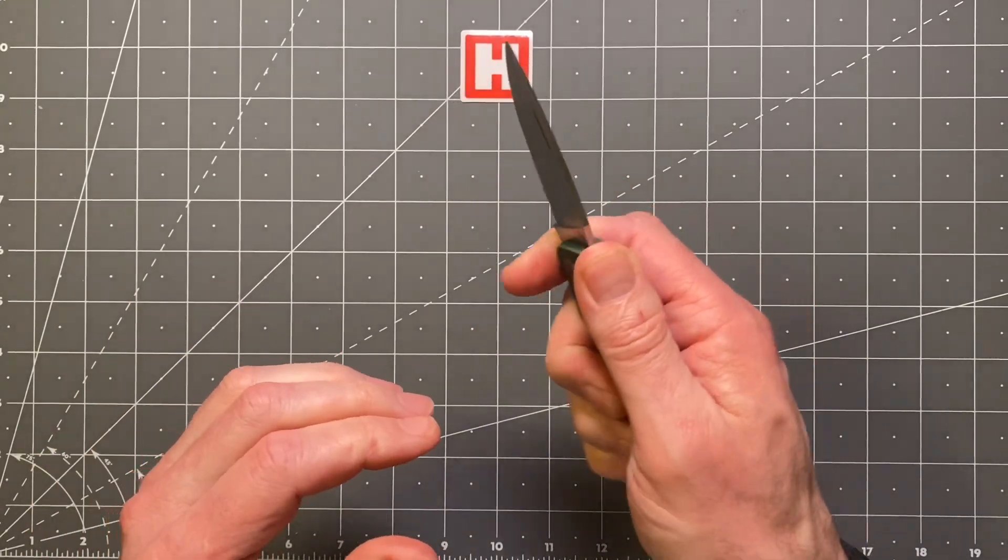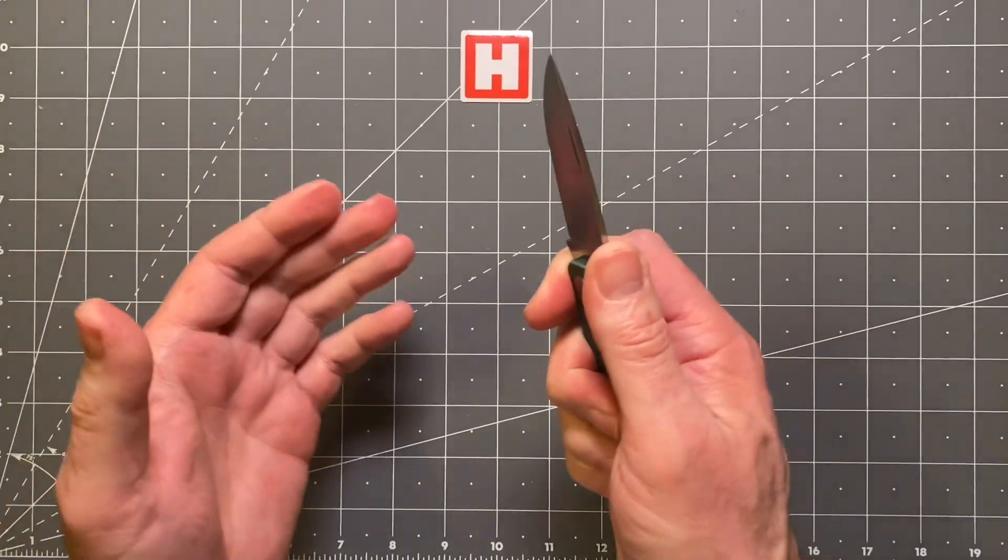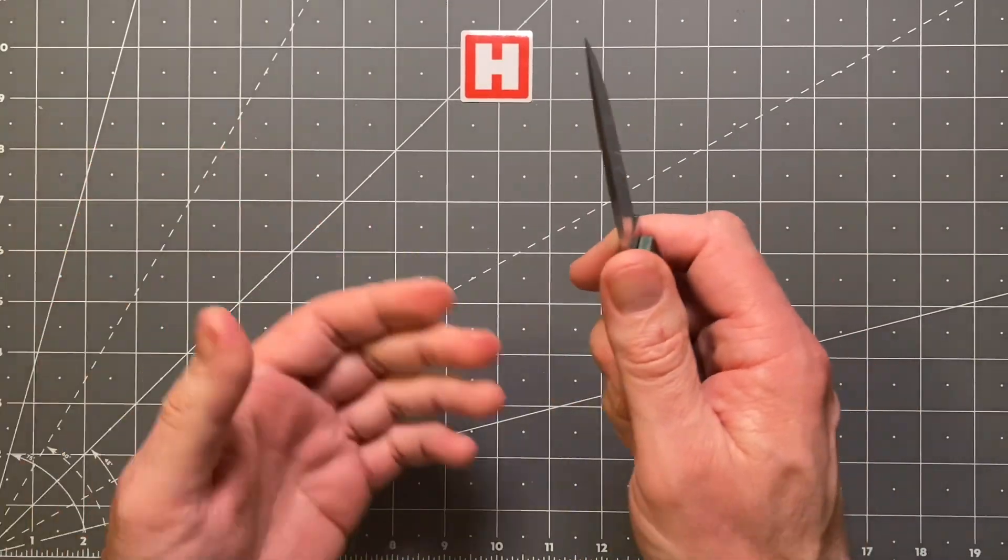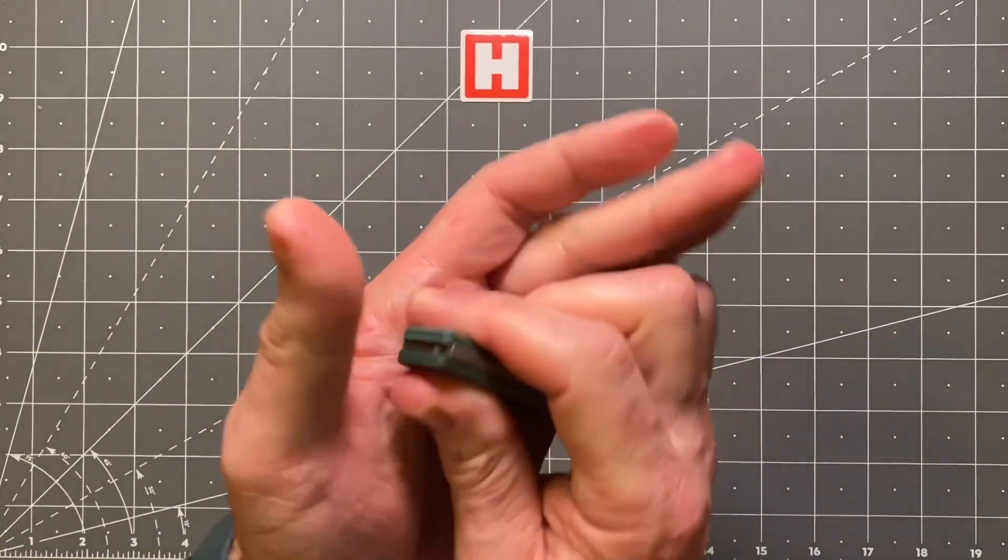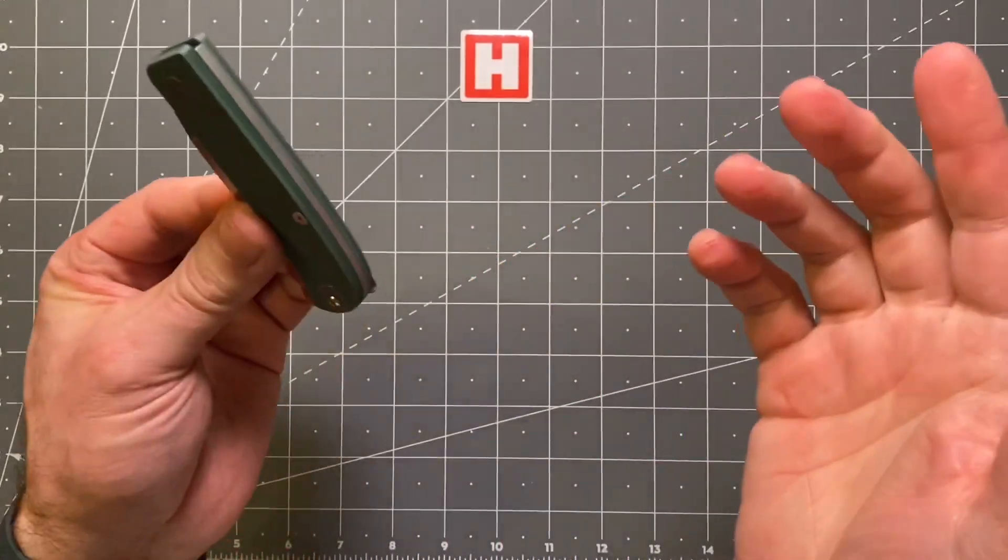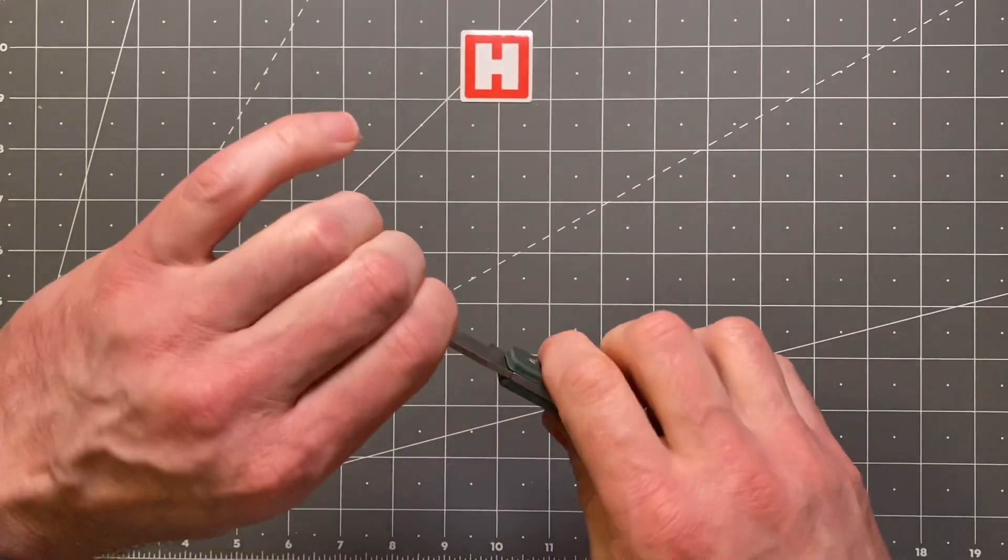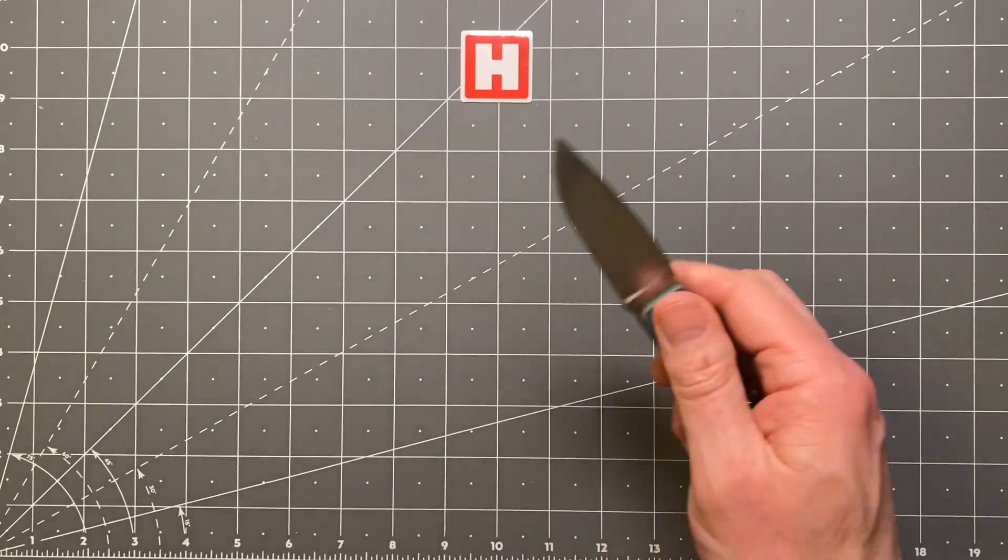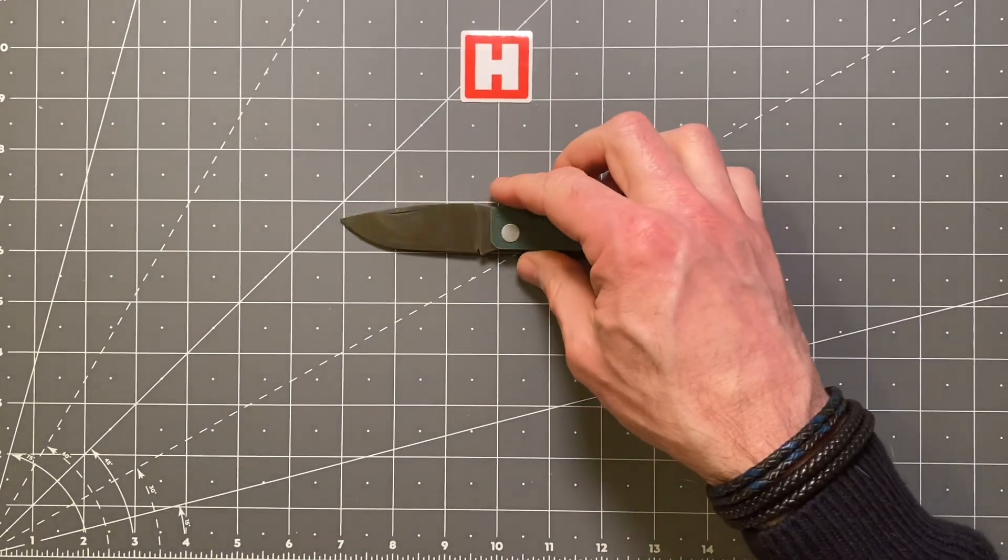But for the money, we're talking, don't forget guys, we're talking 63 pounds which is what, 81 dollars. You're getting a lot of knife for your money, you really are. S90V steel, super steel, remember? Overall dimensions, let's have a look.